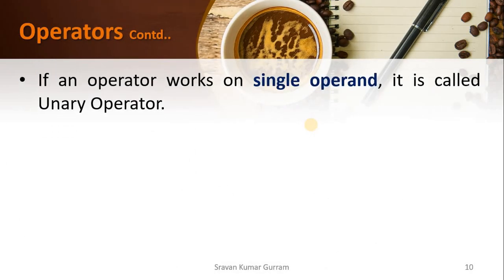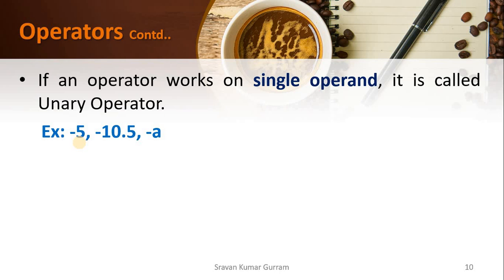Let us see those one by one. If an operator works on a single operand, it is called a unary operator. For example, -5 — here minus is a unary operator because there is only one operand, 5. Similarly, -10.5 has only one operand (10.5), so minus is again a unary operator. We may also have a variable as an operand — for example, -a, where a is the variable. Minus is called a unary operator because only a single operand is used along with that operator.